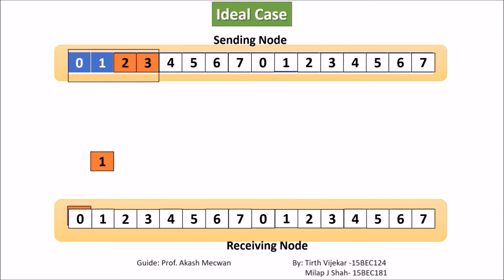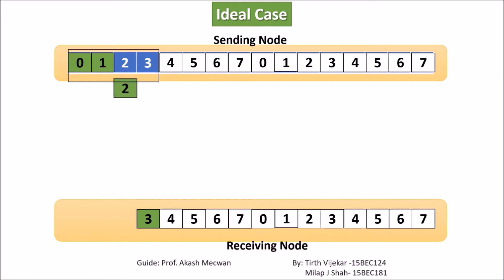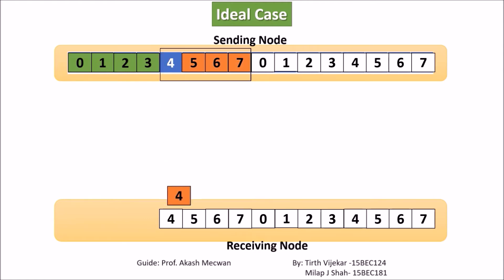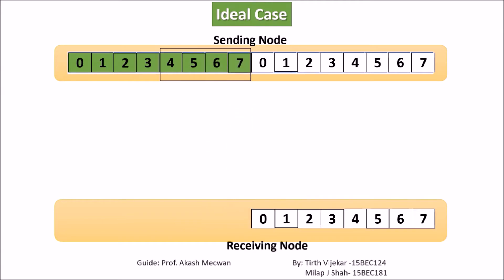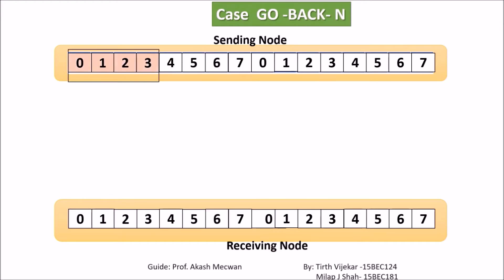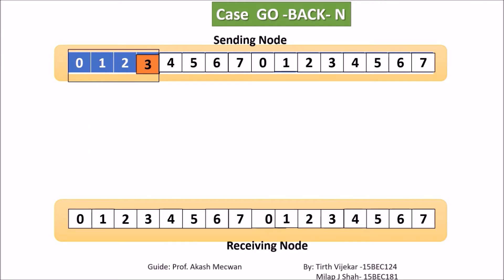Let's see the animation. Consider that there is no loss in the path first. Now, let's explain what happens if frame number 2 is lost in transmission. Frame number 3 will be discarded even if it is perfectly received. Then the transmitter will timeout for frame number 2 and will resend the whole window — frames 0 to 3 — again.